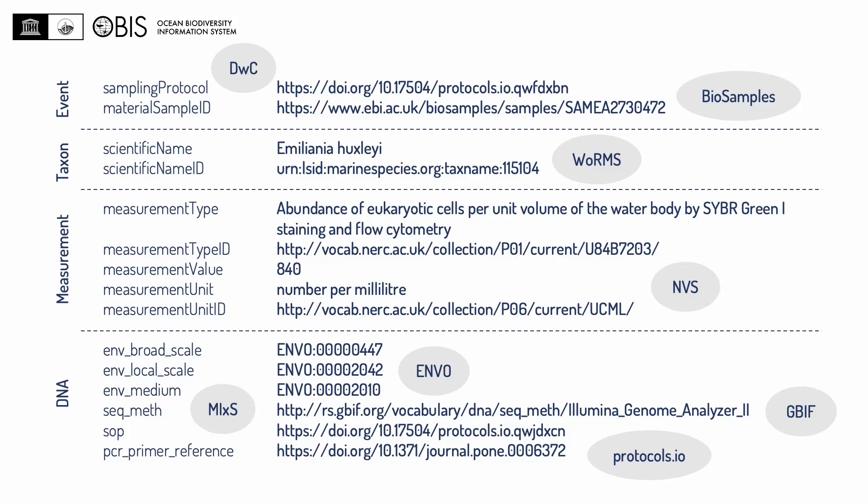For most values, we link out to vocabularies or other external resources using persistent URIs. For the sampling protocol, this could be a DOI which resolves to protocols.io, while the sample is identified by its BioSamples accession number. In the taxonomy fields, we have a Linnaean name but also an LSID which links to the World Register of Marine Species, WoRMS. We can also have an abundance measurement — in this case, abundance of eukaryotic cells per unit volume of the water body by SYBR green staining and flow cytometry — which has an identifier in the P01 vocabulary on the NERC vocabulary server.